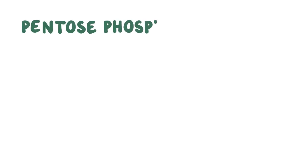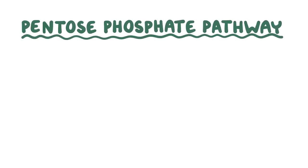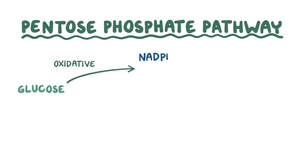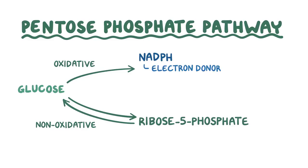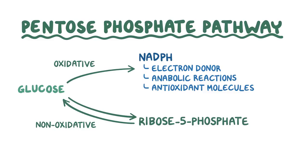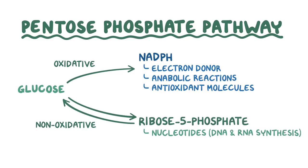As a quick recap: the pentose phosphate pathway is an alternative metabolic pathway for glucose. It's made up of an oxidative phase, which makes NADPH, and a non-oxidative phase, which makes ribose-5-phosphate. NADPH is an important electron donor, required by anabolic reactions as well as antioxidant molecules. Ribose-5-phosphate is crucial for making the nucleotides necessary for DNA and RNA synthesis, as well as creating intermediates of glycolysis, like glyceraldehyde-3-phosphate and fructose-6-phosphate.